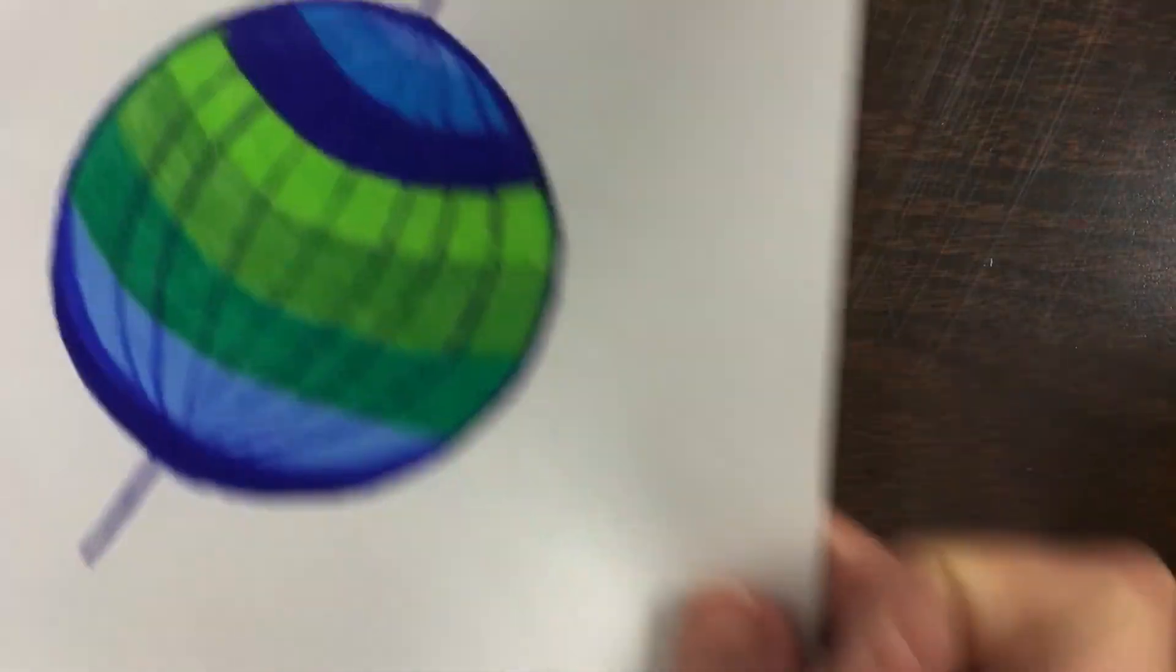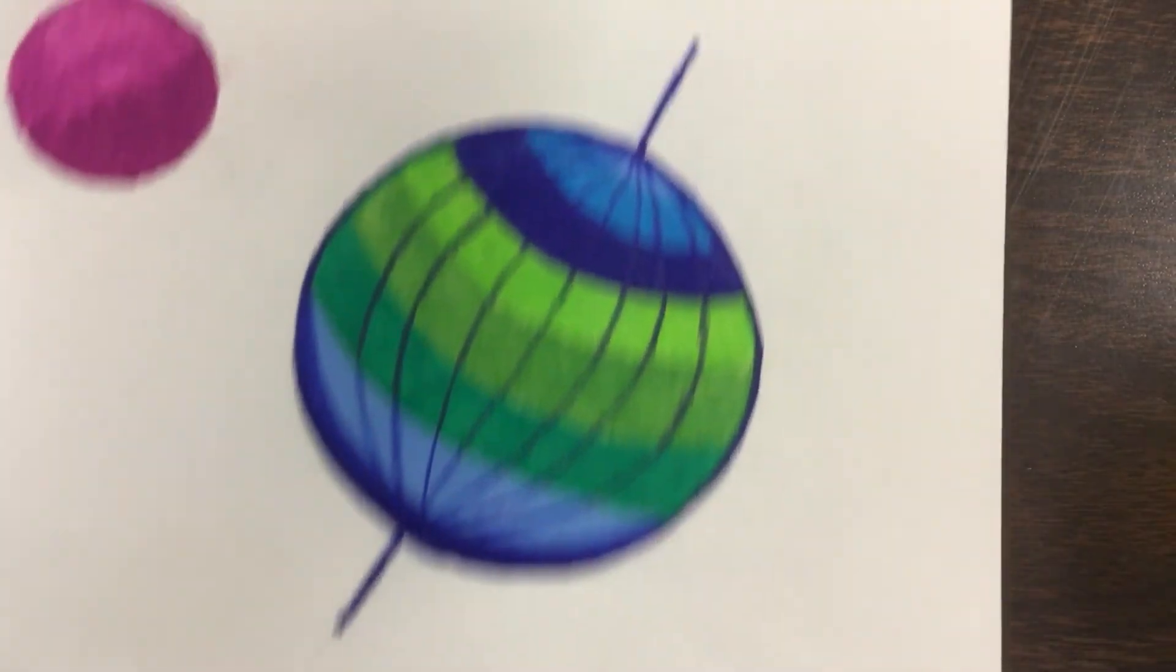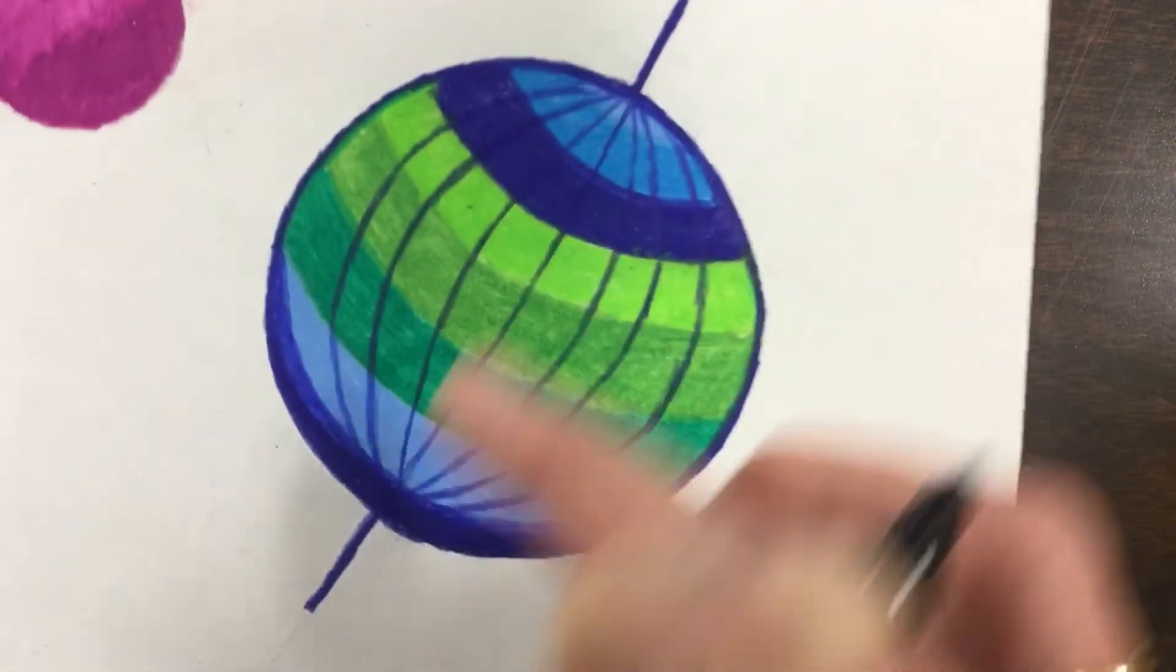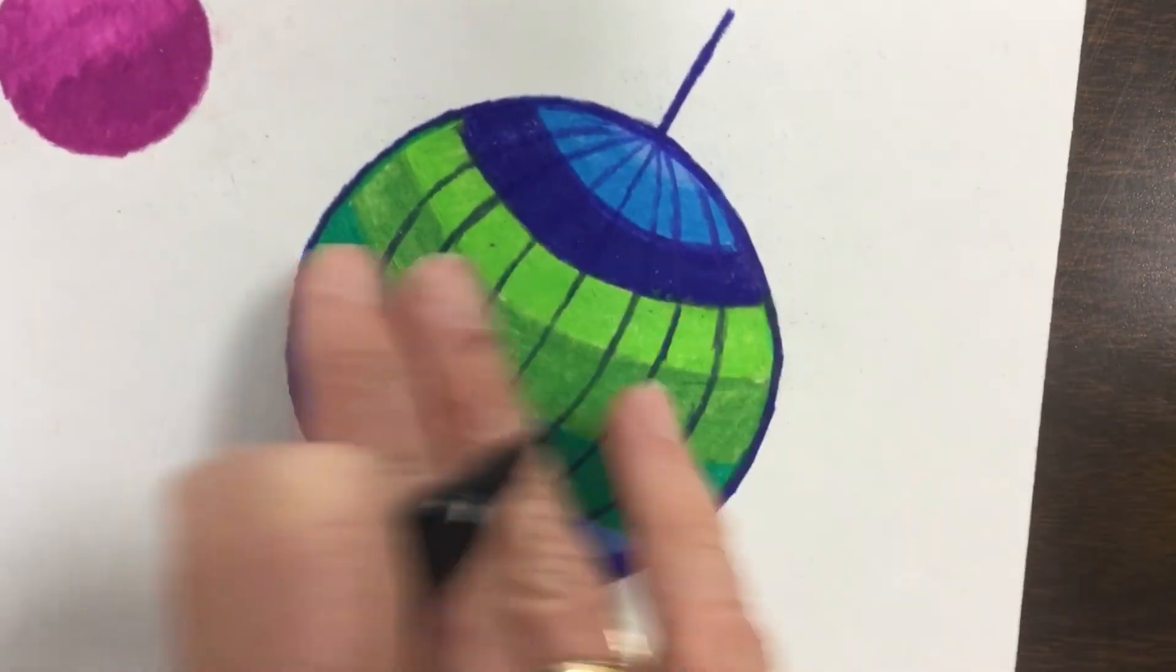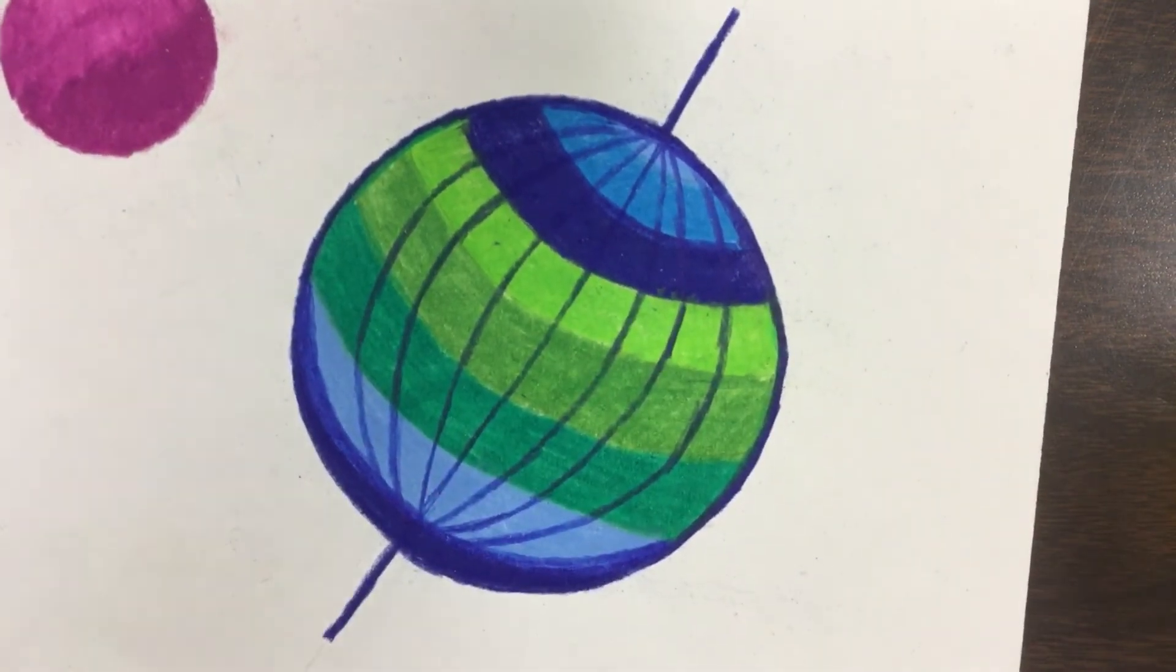You can color it in. I tried to color mine. And if I was making the solar system, I would erase this line and this line. And kind of erase some of those and kind of turn it into planet Earth.